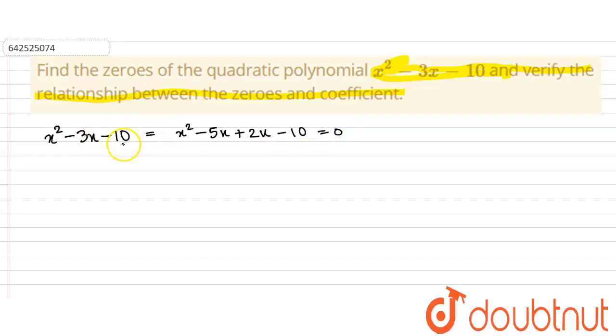So what we did, we just split 10 in 5 into 2 and since it is minus 3 we did minus 5x plus 2x and this is equal to 0.